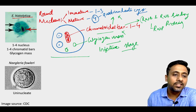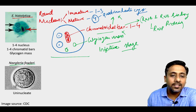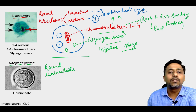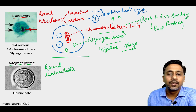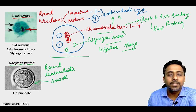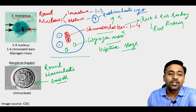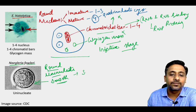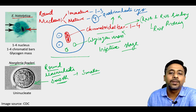Now coming to the next cyst — this is the cyst of Naegleria fowleri. Again, this cyst is also round in shape but it is always uninucleate. In fact, all cysts of free-living amoeba are uninucleate. The surface of this cyst is smooth. I am mentioning smooth because in the case of Acanthamoeba, the surface is not smooth. It has a round shape, is uninucleate, has a smooth surface, and is smaller compared to the cyst of Entamoeba histolytica.